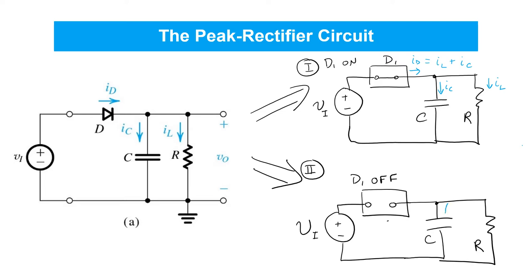So during this period of time, the capacitor is being discharged and the output voltage will decline. But it won't immediately drop to zero as it did in the simple half-wave rectifier. In fact, if we make the capacitor value C large enough, the capacitor can continue to deliver charge to the load until the next time the diode D1 becomes forward biased.